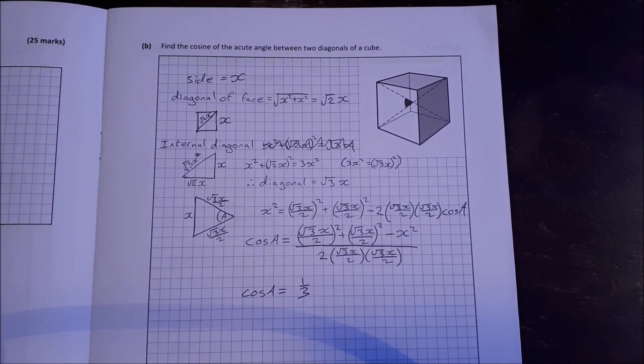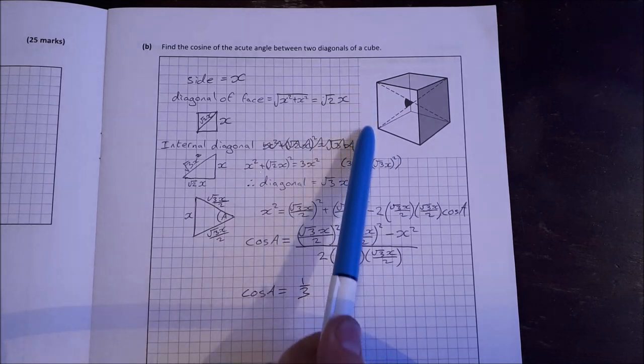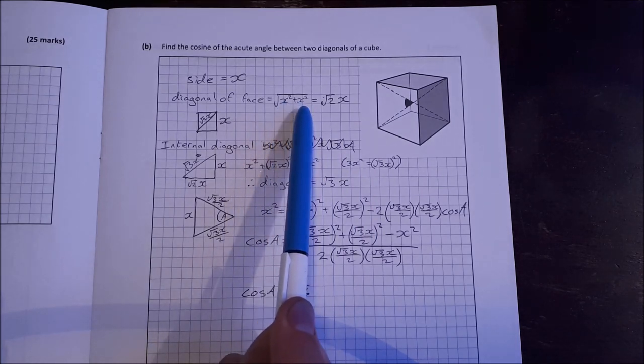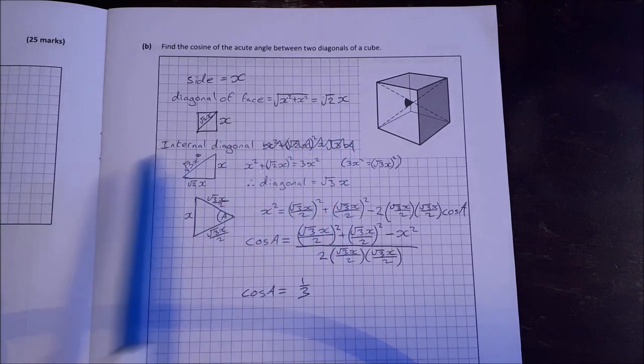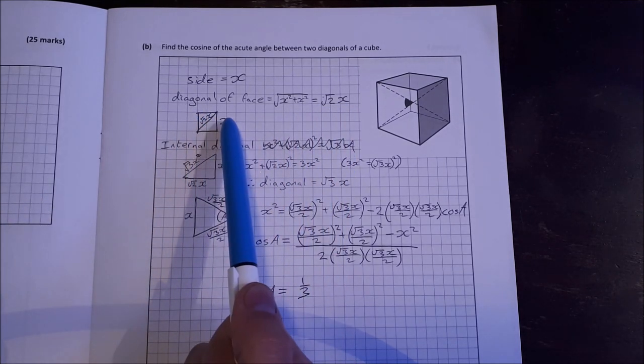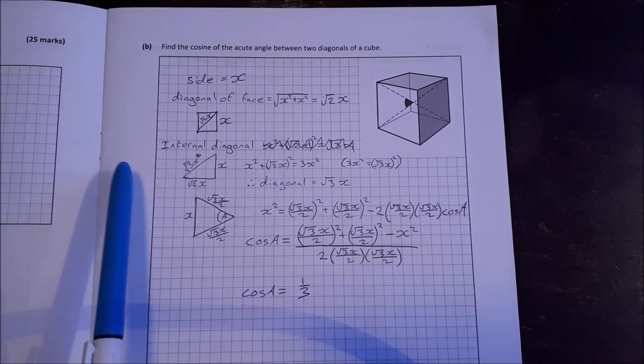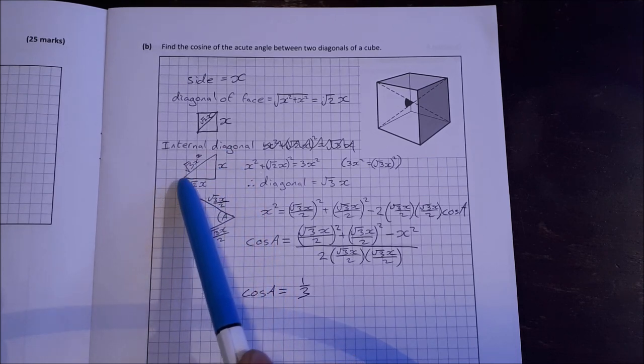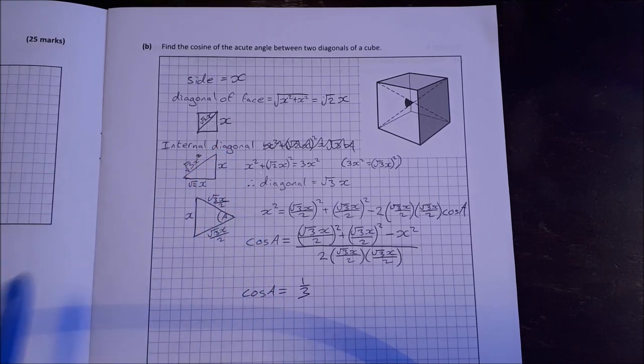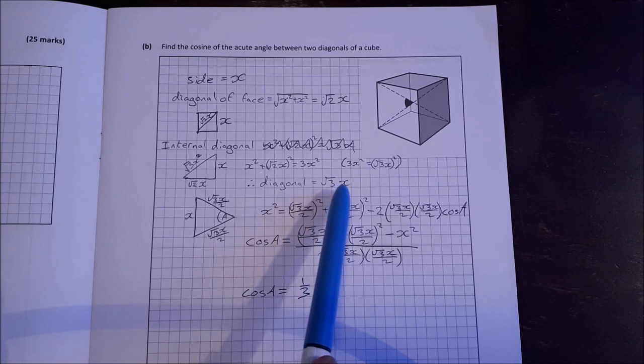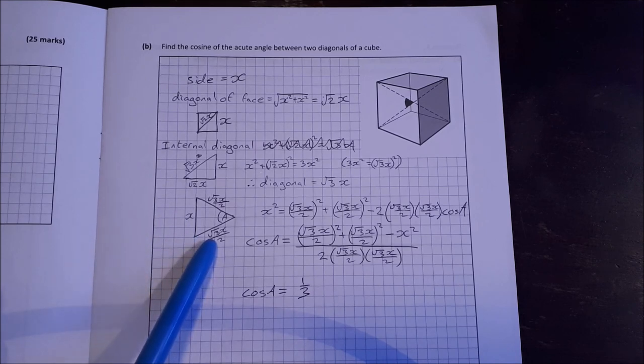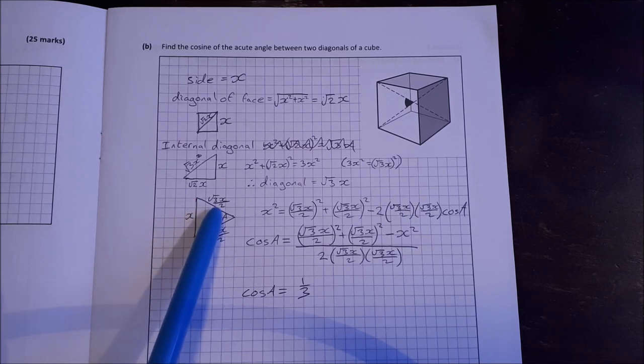Part b. Find the cosine of the acute angle between the two diagonals of a cube. For this one, let the side equal to x, any unknown number x. The diagonal of a face then is the square root of x squared plus x squared, which is root 2x. So that means we have a face. We have x and we have the diagonal root 2x. The internal diagonal then we can use this triangle. So we have a side x, the diagonal root 2x and find the third side of that triangle. The diagonal is going to be root 3x if you work through Pythagoras again.